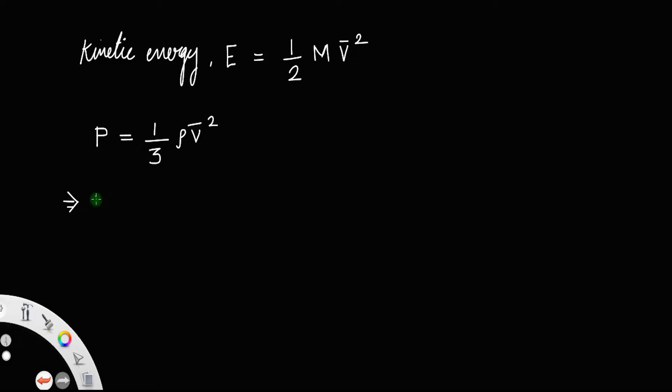Implies p is equal to 1 by 3, density is actually mass by volume, m by v, v bar square. If you take the v to the left, you will get p v is equal to 1 by 3 m v square.